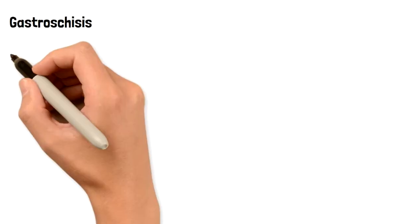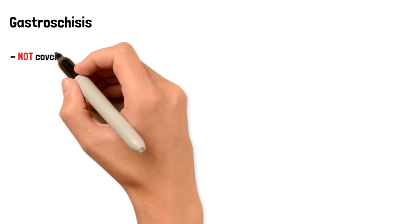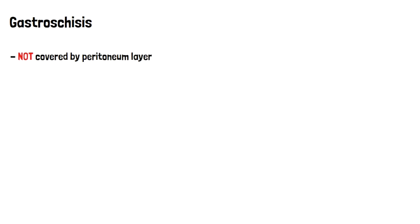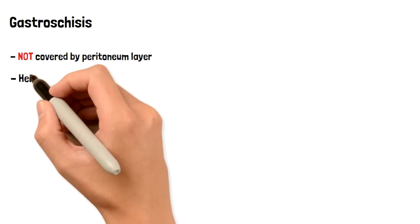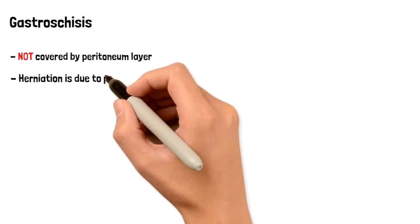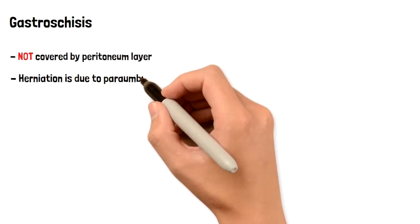Now let's compare that to gastroschisis. In this case, this herniation is not covered by any membrane. It's free floating when it protrudes out. In this herniation, it's going to be due to a para-umbilical abdominal wall defect, usually on the right side but not always.